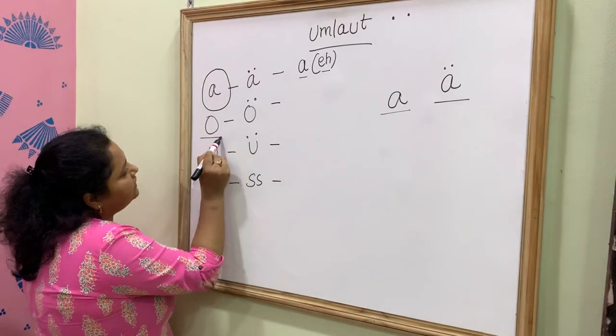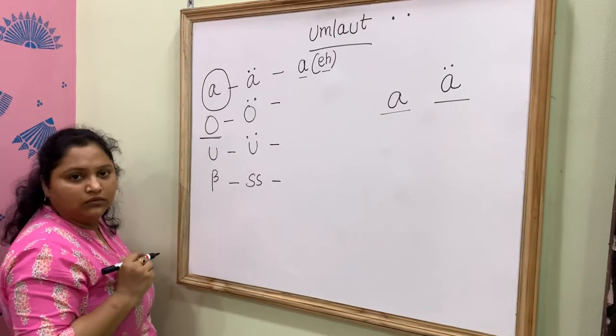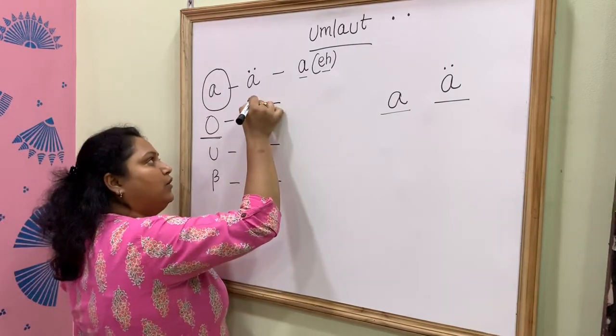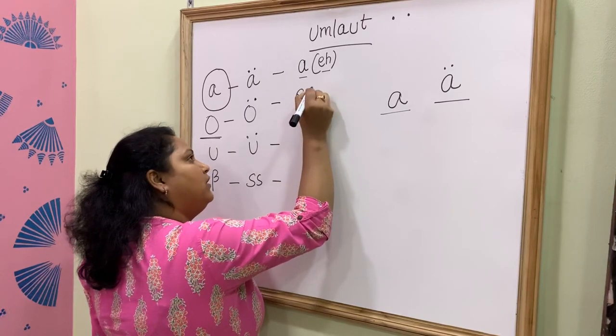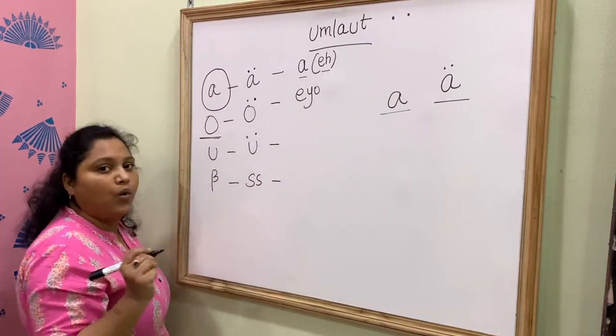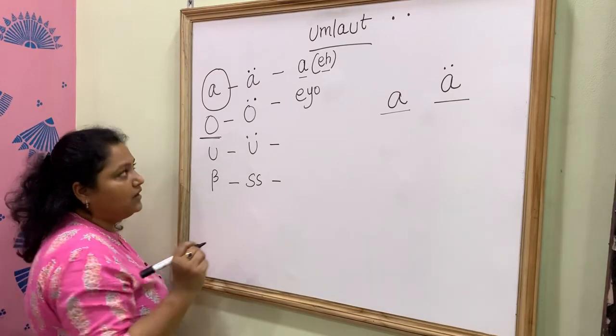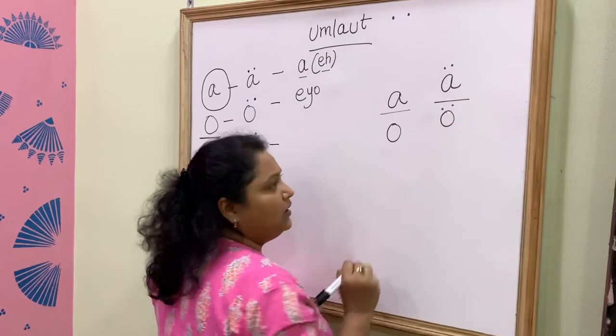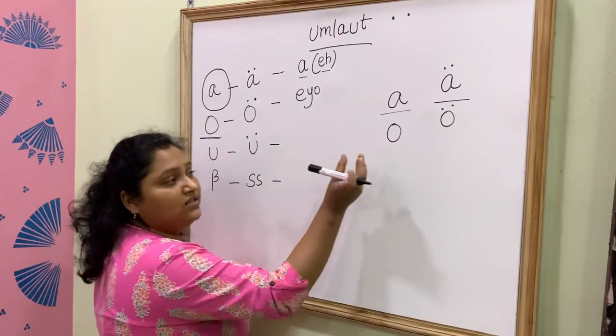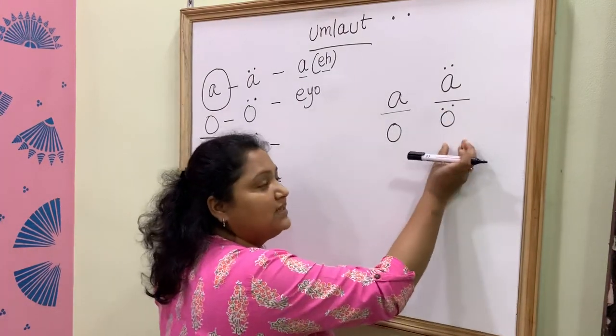This is O. But the moment you put the Umlaut, it becomes EO. The pronunciation of this and this will be different - one is O, one is EO.